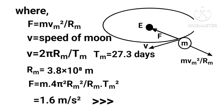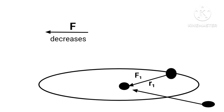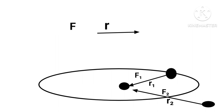This is much smaller than the value of acceleration due to gravity g, which is 9.8 meters per second squared on the surface of the earth — also arising due to earth's gravitational attraction. So what we see here is that the force due to earth's gravity decreases as we move away from the center of earth.